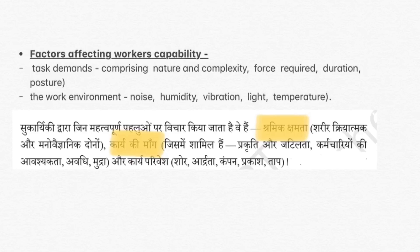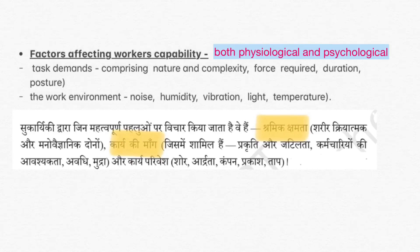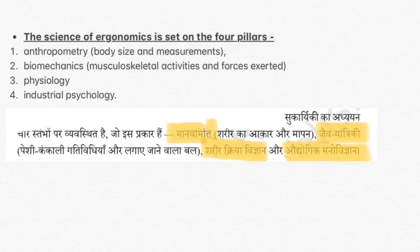The environmental factors include: Shor (noise), Adrata (humidity), Kampan (vibration), Prakash (light), and Taap (temperature). These are the first important factors relating to how the human works. One factor also important to explain is both physiological and psychological — physiological means body, and psychological means mind. These are very important factors which actually affect the worker's capacity of doing the work.